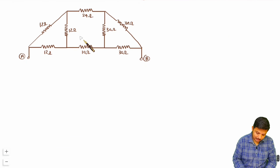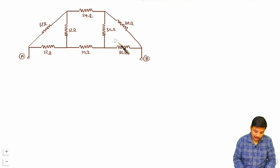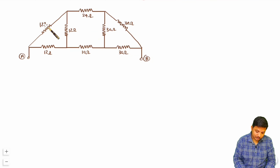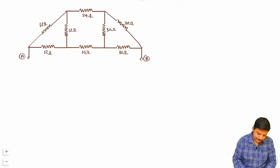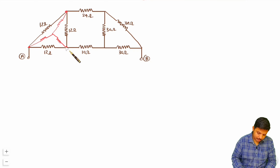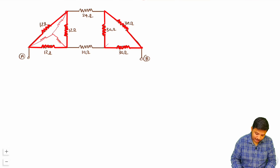Now we are solving this circuit further. I don't see anything now in series or parallel. To solve this circuit further, if you see here we have a delta configuration with resistance 12 ohm, and over here also we have a delta with resistance 30 ohm. So we have three terminals and I will be making each delta into a star.